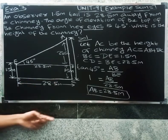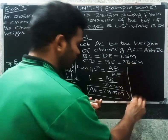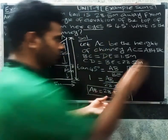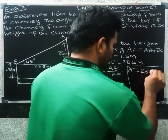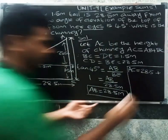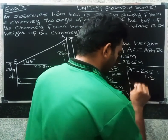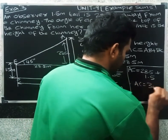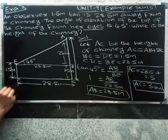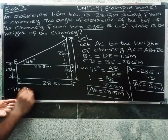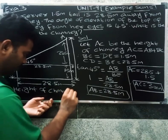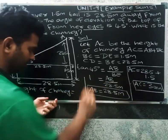Now, AC equals AB plus BC. AB value is 28.5 meter and BC value is 1.5 meter. Therefore AC equals 28.5 plus 1.5 equals 30 meter. Therefore the height of the chimney equals 30 meter.